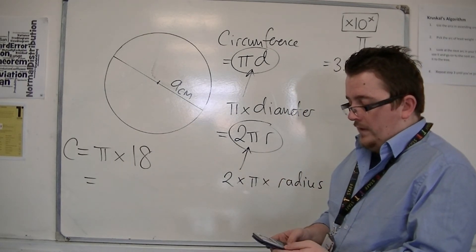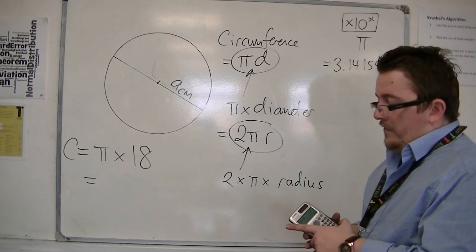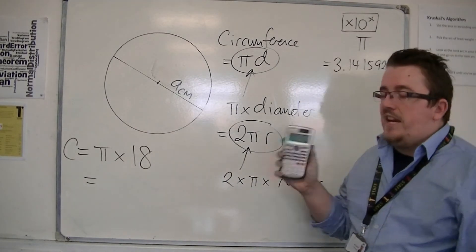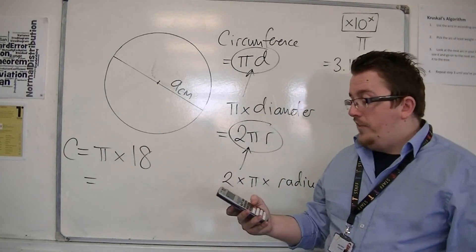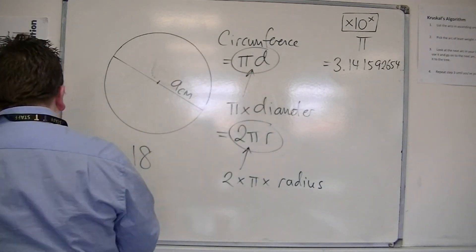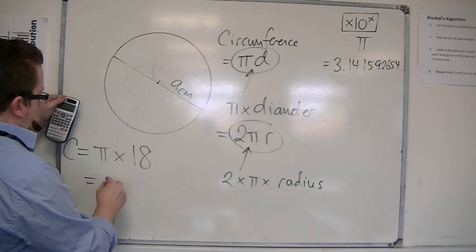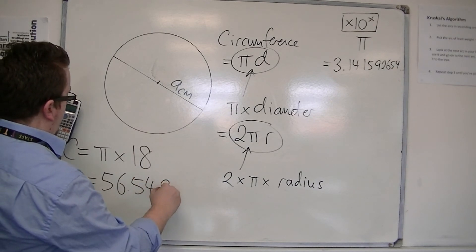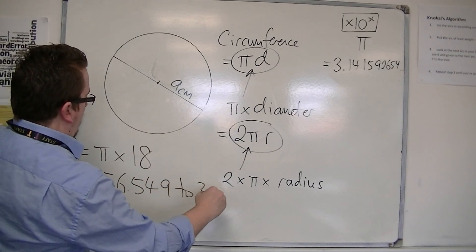And on one of these newer Casios, you'll probably already get 18π. Press the SD button, and then it should come up with a decimal. That's what we want. So, you should find it's 56.549 to three decimal places.